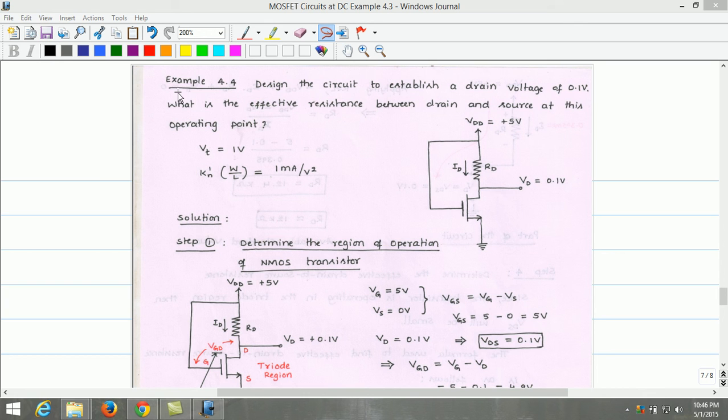In this video, let us consider example 4.4. So in this problem, we need to design the circuit to establish a drain voltage of 0.1 volt and also find the effective resistance between drain and source at this operating point.